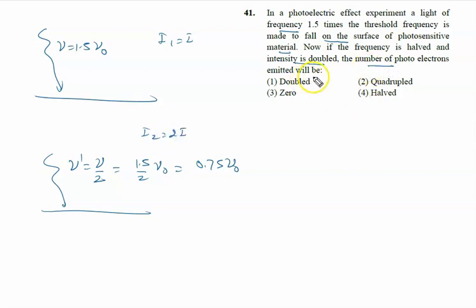The number of photoelectrons emitted totally depends on the frequency of the incident radiation. If the frequency of the incident radiation is less than the threshold frequency, then there is no photoelectric emission.